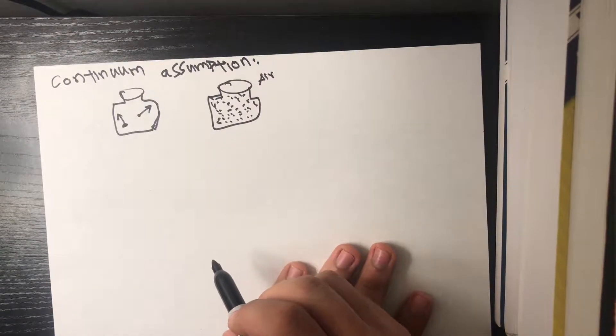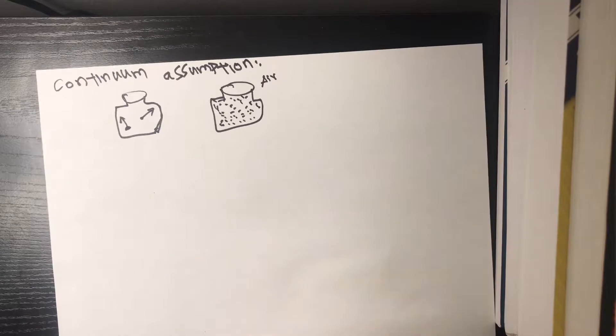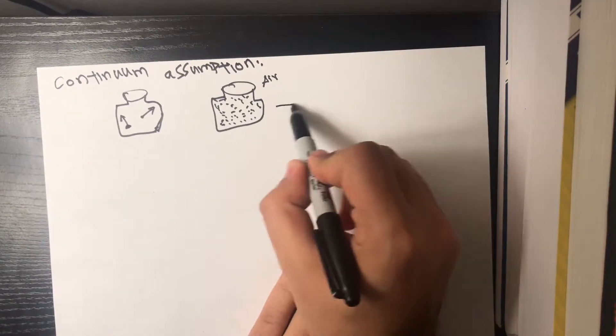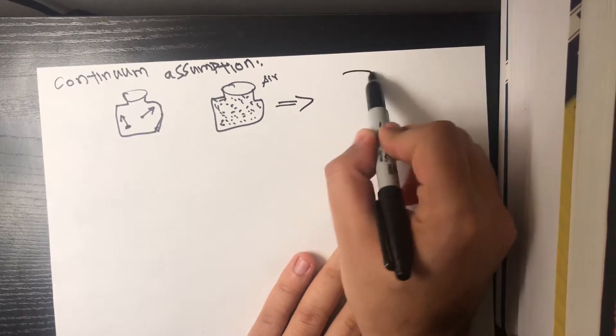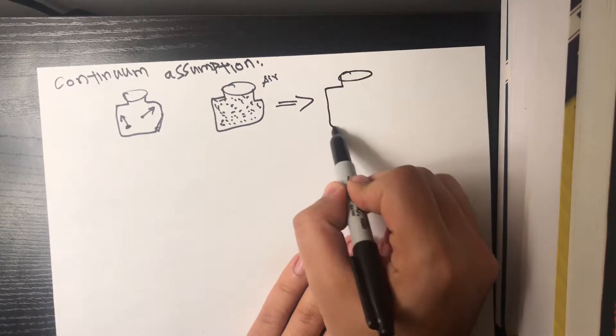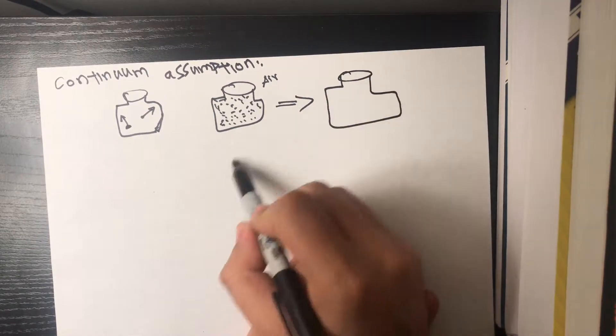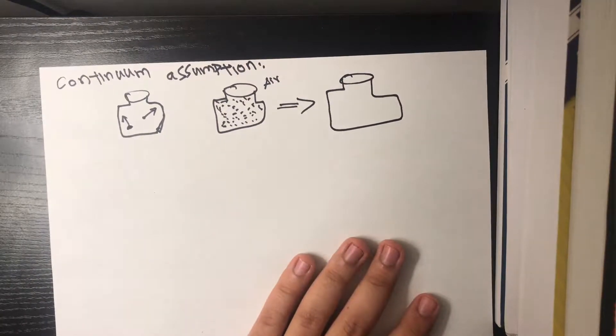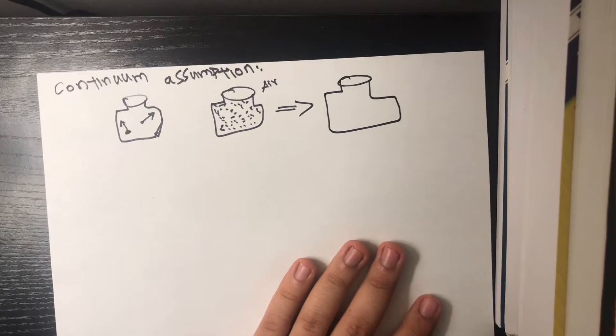Now what the continuum assumption says is that we can assume this jar to the right here is the same jar as one that's smoothed out, meaning we can assume that there's molecules in every inch of, or every region of space.